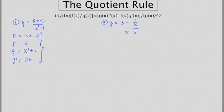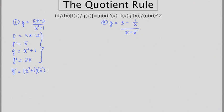So these are our puzzle pieces — the components which we plug into this formula. The derivative can be found by using the bottom function, x squared plus 1, times the derivative of the top function, which is 5, minus the top function, which is 5x minus 2, times the derivative of the bottom function, which is 2x.